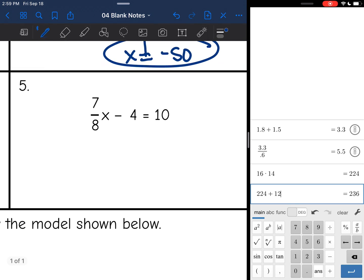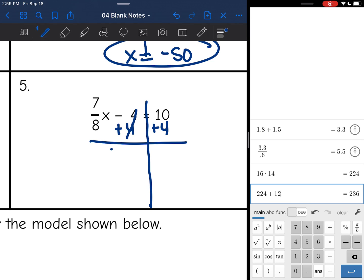Okay, number 5. I have a constant that I need to get rid of first, so I'm going to undo that minus 4 by adding 4 to both sides. And I'm left with 7/8 x equals 14.